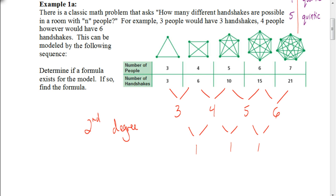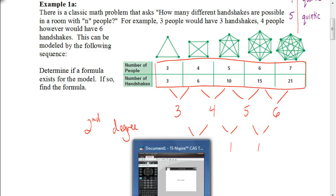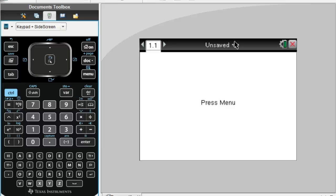Now we want to figure out what quadratic polynomial would fit the data in our table. This is where we're going to use this top row of numbers — previously we haven't used them, but now they'll come in handy for finding the polynomial. We're going to go to our graphing calculators and go to a spreadsheet.